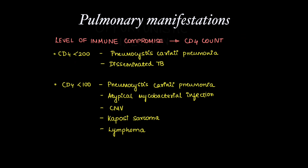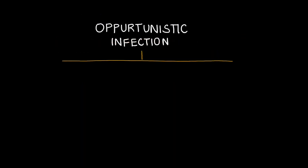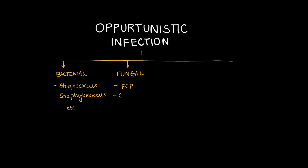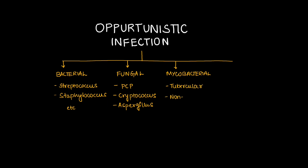Now let's discuss in detail opportunistic infections in HIV. Bacterial infections can be streptococcal, staphylococcal, etc. Fungal infections include Pneumocystis carinii, Cryptococcus, and Aspergillus. Mycobacterium includes tubercular and non-tubercular mycobacteria. Viral infections include cytomegalovirus and influenza.